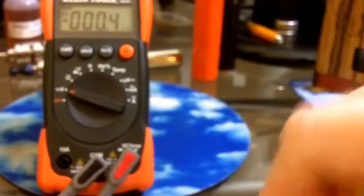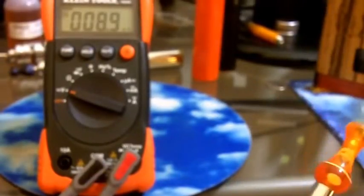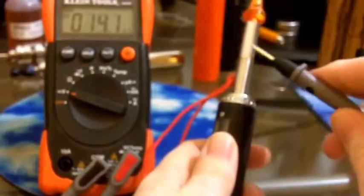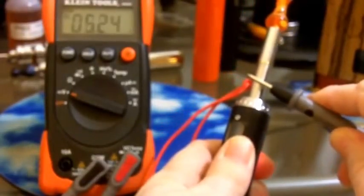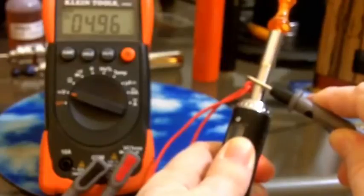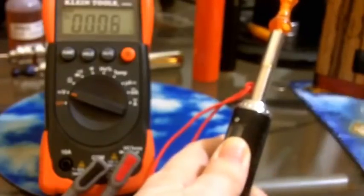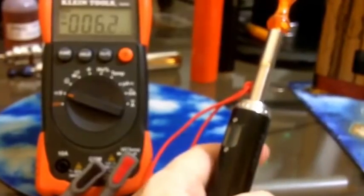Now to test the output of the battery or the mod under the load, you attach an atomizer to the top and do the same thing. 4.97, 4.96, slightly less than 5 volts but still pretty close and that's how you test your mods.